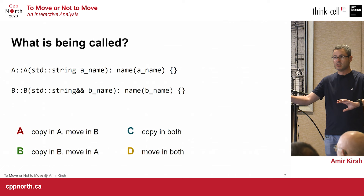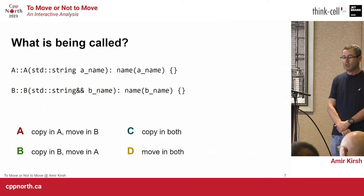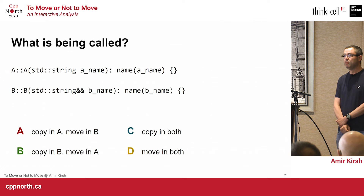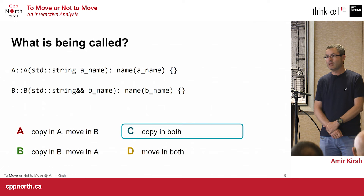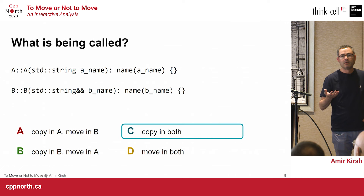We'll have an interactive session. The question: what will be called in these two constructors? In the first we get a string by value, in the second as an rvalue. In both, we pass it to a data member called 'name'. Would we have a copy or a move in each? The actual answer is copy in both cases. Don't count points on that one yet.